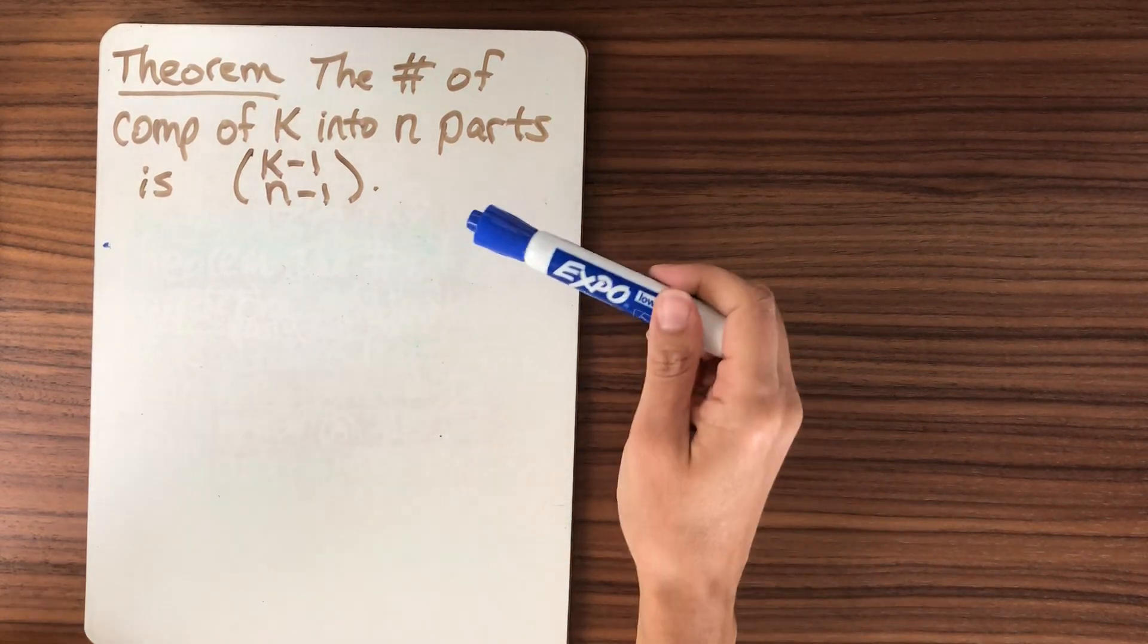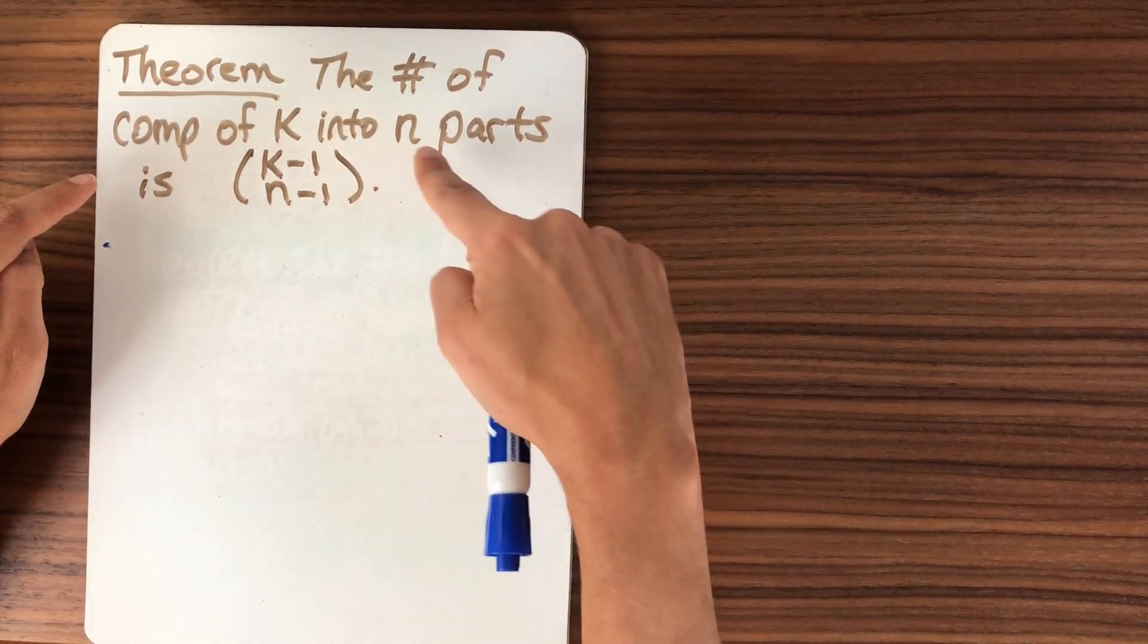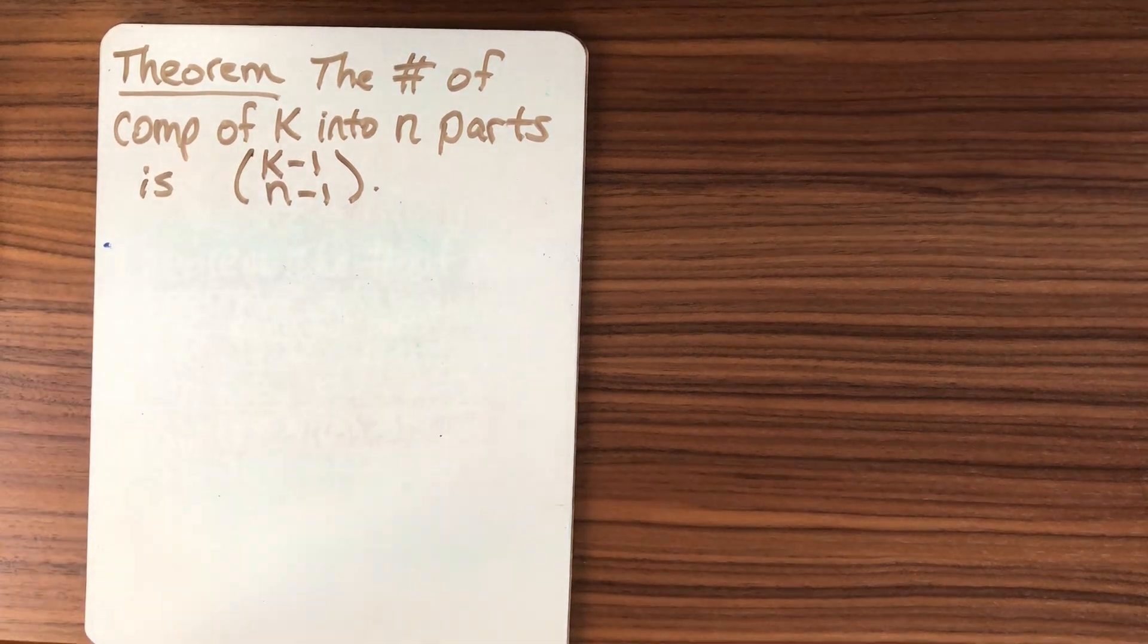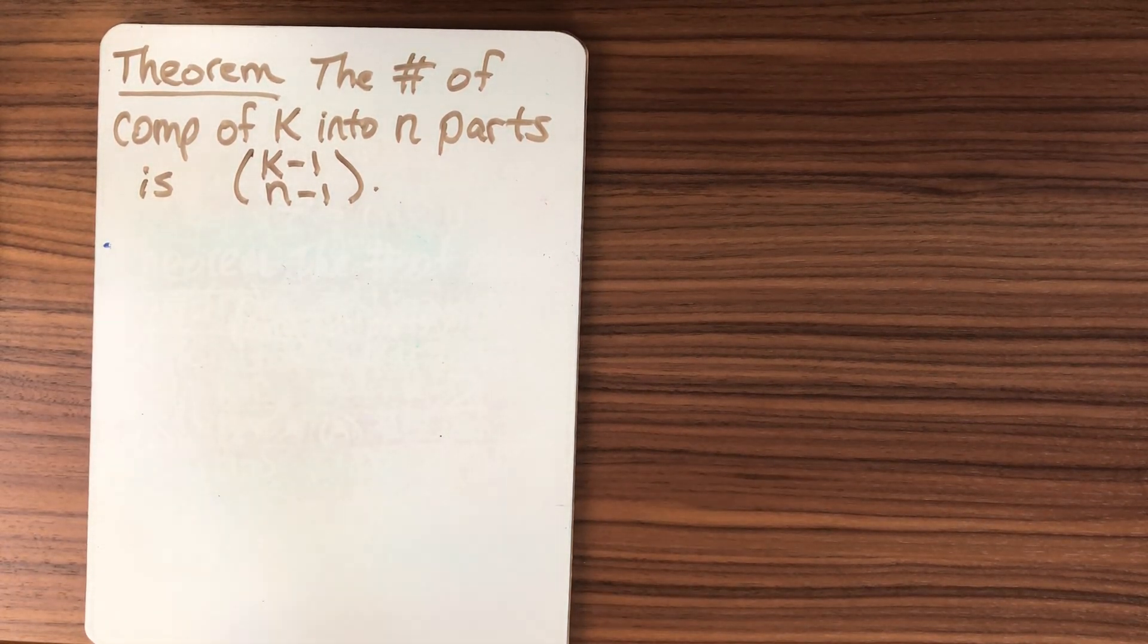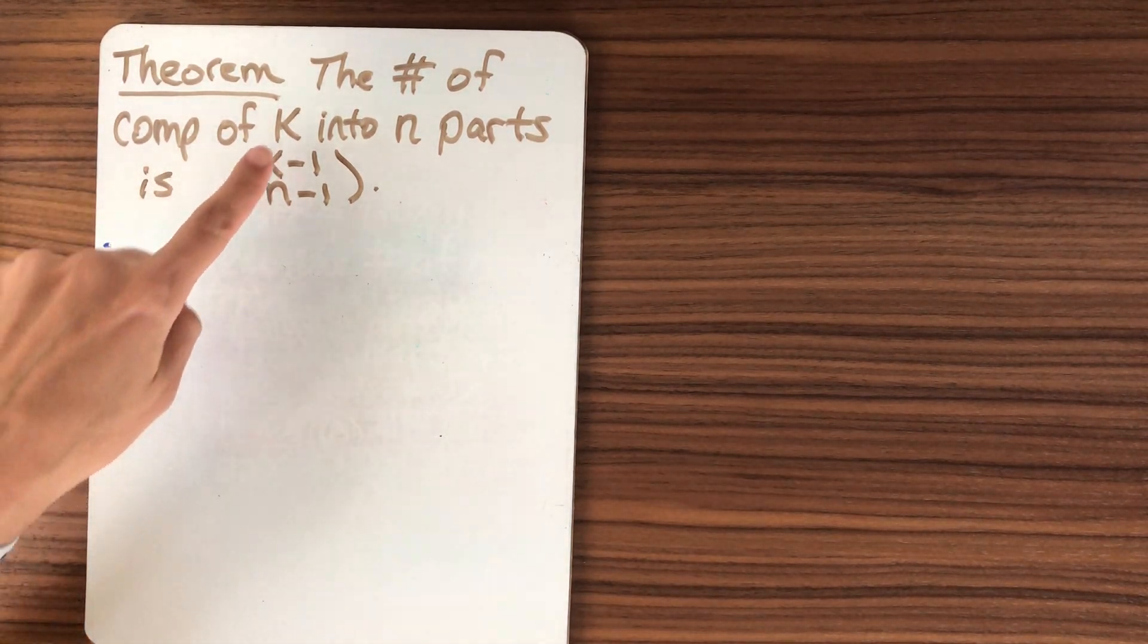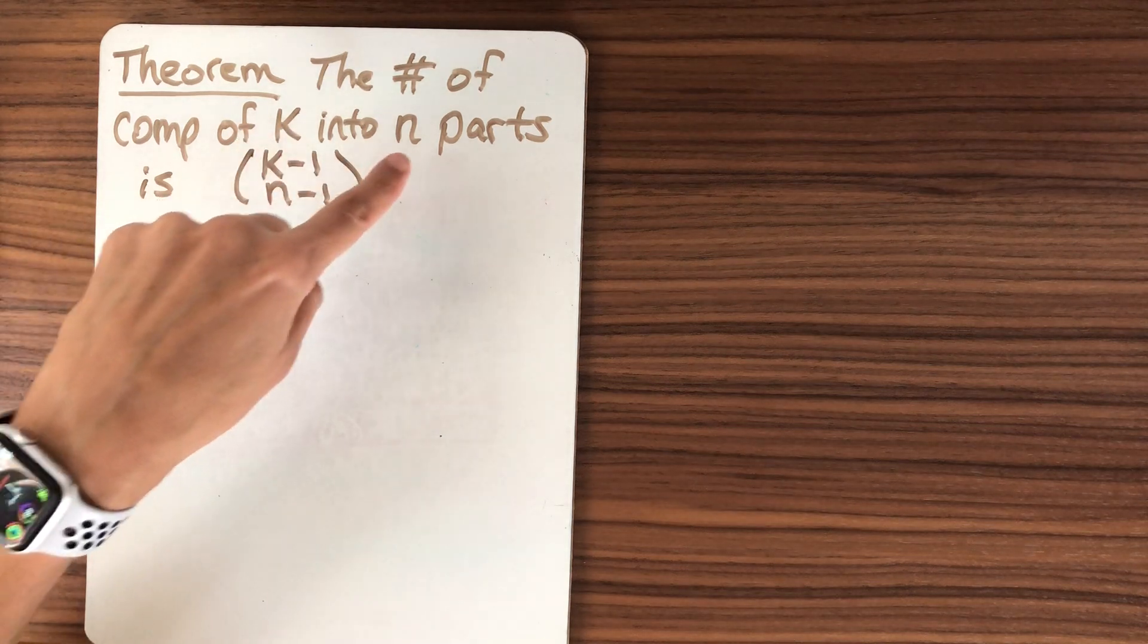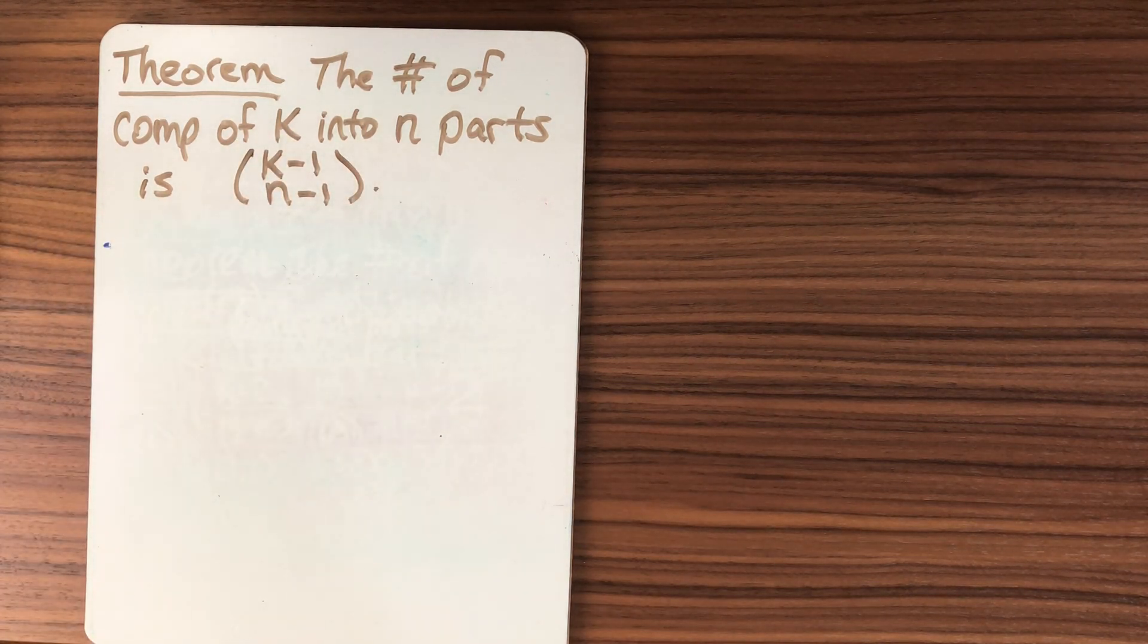Last time we proved this theorem about the number of compositions of k into n parts is given by this binomial coefficient. One of the reasons for weak compositions that we counted the size and the number of parts was to make the problem finite.